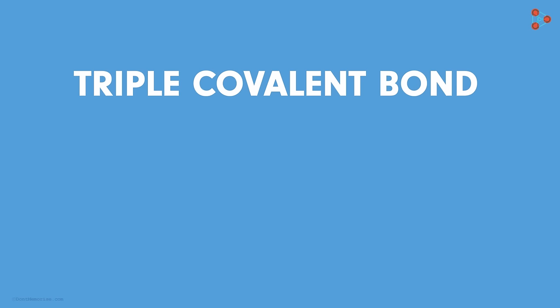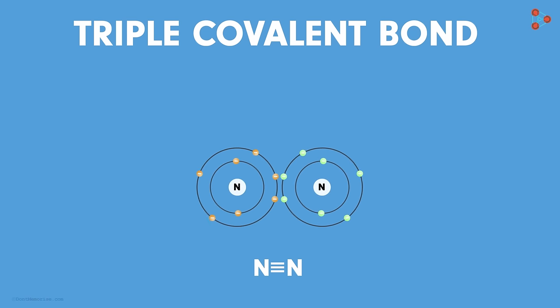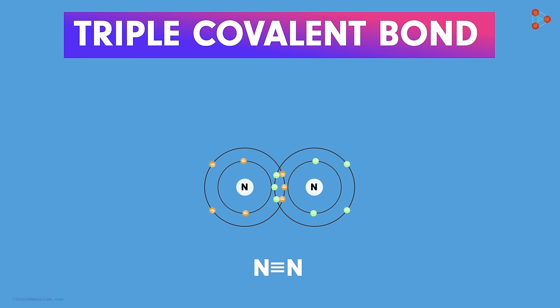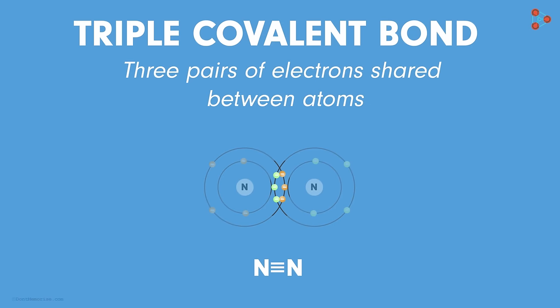And the best example to study this is the case of nitrogen. We always find a nitrogen molecule written like this. Needless to say that the two nitrogen atoms share a triple covalent bond. That means three pairs of electrons or simply six electrons are shared between the atoms.